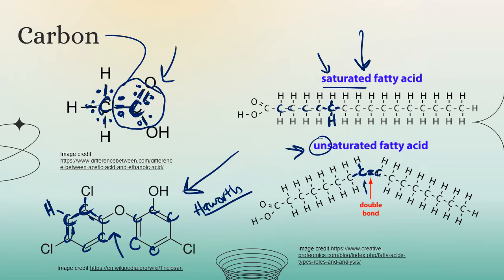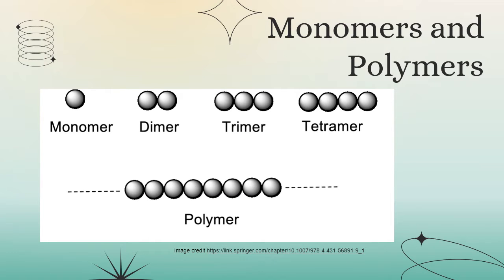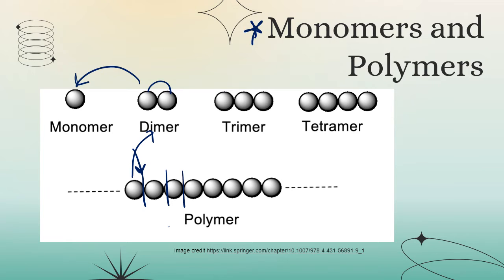Two of the most common processes we carry out with carbon and other molecules are polymerization and the digestion of those polymers. Many food molecules are polymers — large chains of pieces glued together. Starch is a polymer of glucose molecules; proteins are polymers of amino acids. When we eat proteins or starches, our bodies break those polymers down into dimers (two pieces) or monomers (individual pieces), then reassemble them into trimers, tetramers, or new polymers.